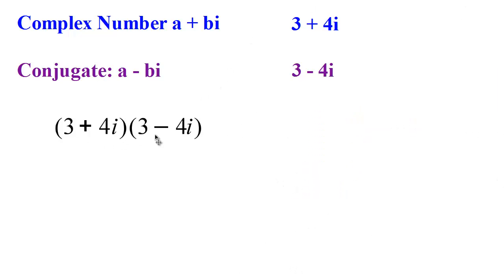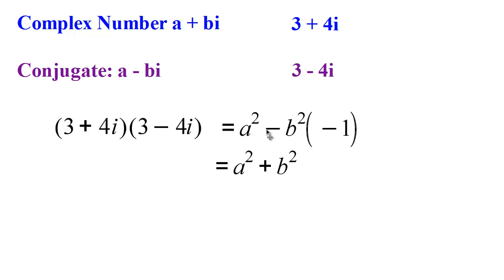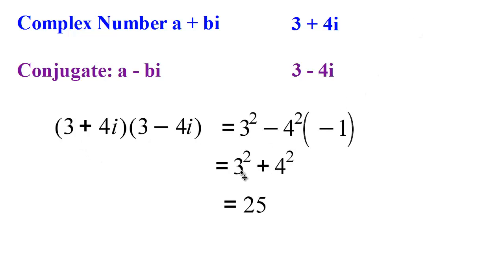Applying this to 3 plus 4i times its conjugate 3 minus 4i: the middle terms cancel out and we get a squared plus b squared. Since a is 3 and b is 4, we get 3 squared plus 4 squared, which equals 25.